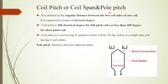Pole pitch is nothing but the distance between the centers of two adjacent poles. Here we can see north and south poles. If we draw a line from the center of the north and south poles, the distance between the centers of these two poles will be the pole pitch. So, coil span is the distance between the coil sides of a coil, while pole pitch is the distance between the centers of two adjacent poles.